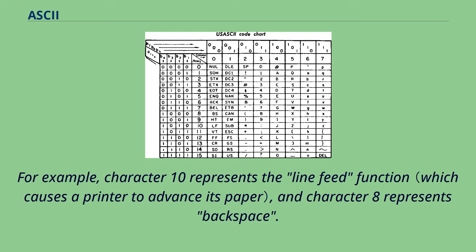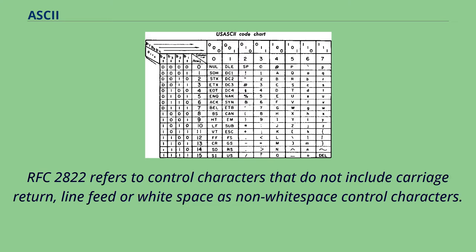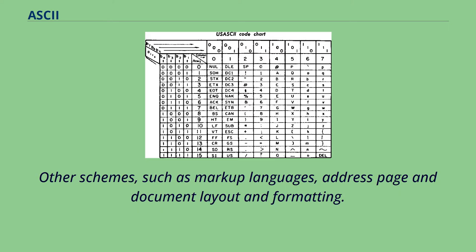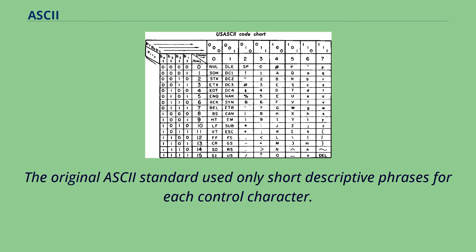For example, character 10 represents the line feed function, and character 8 represents backspace. RFC 2822 refers to control characters that do not include carriage return, line feed, or white space as non-whitespace control characters. Except for the control characters that prescribe elementary line-oriented formatting, ASCII does not define any mechanism for describing the structure or appearance of text within a document. Other schemes, such as markup languages, address page and document layout and formatting. The original ASCII standard used only short descriptive phrases for each control character.